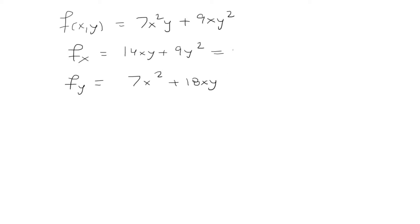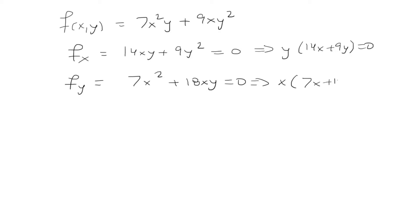Set each one equal to 0. For the first equation, we can factor out a y to get y(14x + 9y) = 0. For the second equation, we factor out x to get x(7x + 18y) = 0. From the first equation, either y = 0, or we set 14x + 9y = 0, giving y = −14/9 · x.